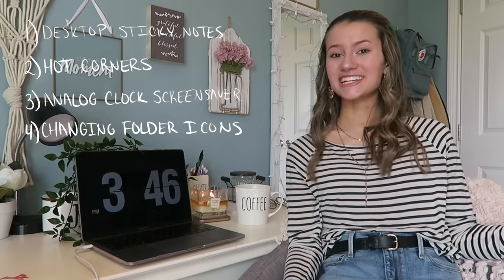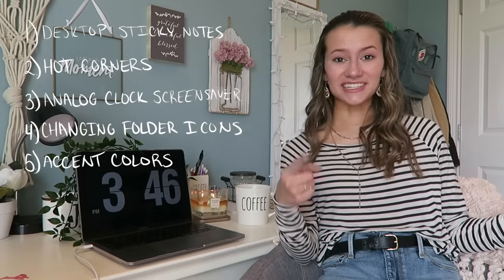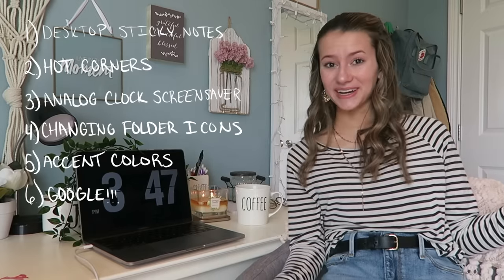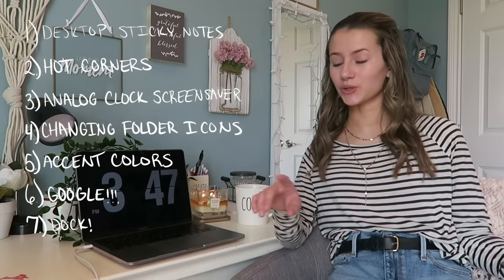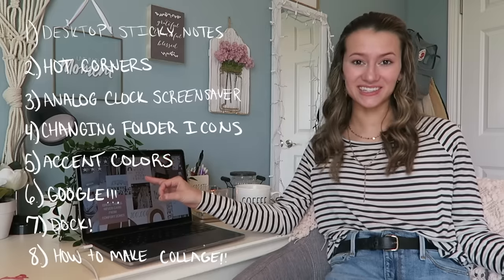As an overview, I'm going to list everything I'm going to be going over and also have it in the description with time cards so you can skip around. Number one: sticky notes and how you can customize those. Number two: hot corners. Number three: how I got this beautiful analog clock screensaver. Number four: how to change and customize the icons on your desktop. Number five: accent colors. Number six: how you can customize your Google. Number seven: how to automatically hide and show your dock. And number eight: how to make a customized collage lock screen.